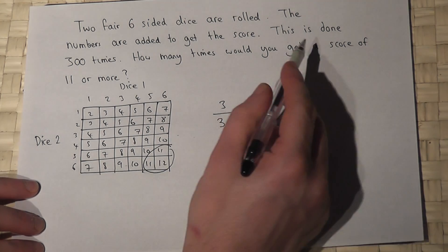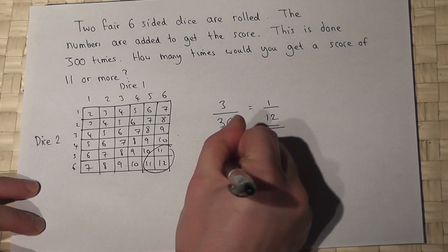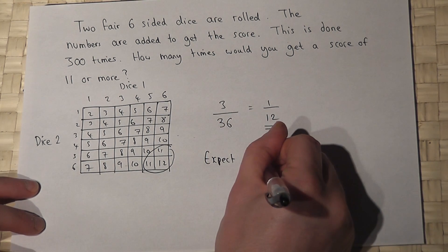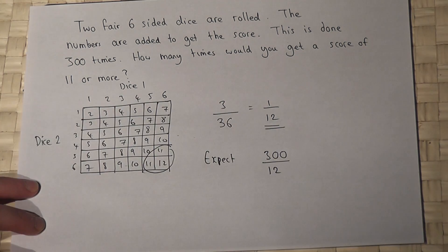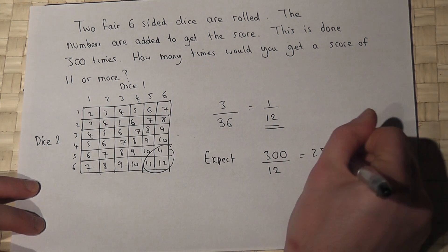So if you do this three hundred times, then you expect to get three hundred divided by twelve, which works out at twenty-five times.